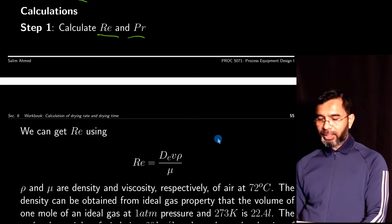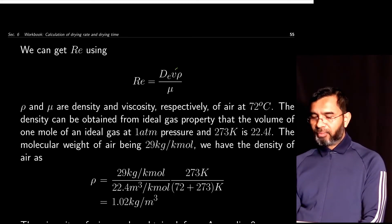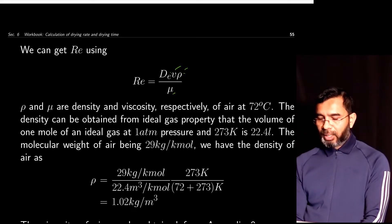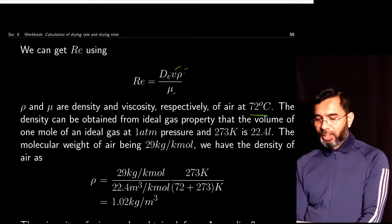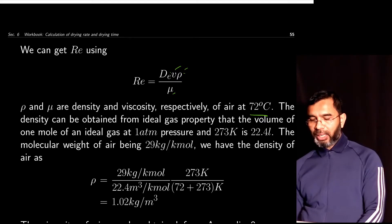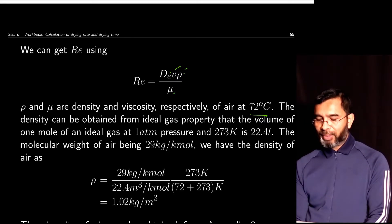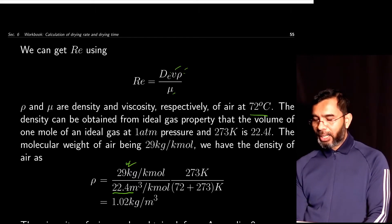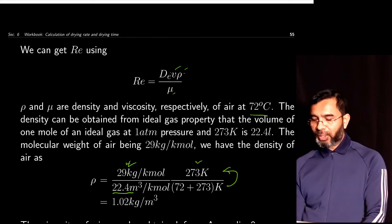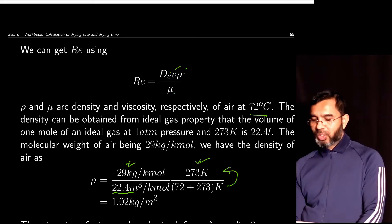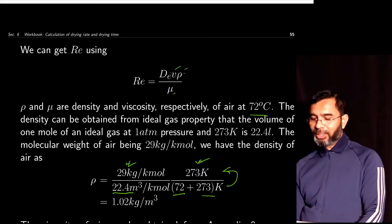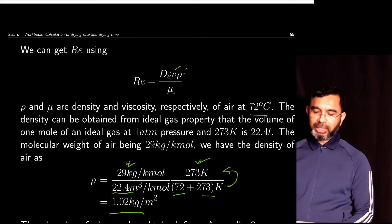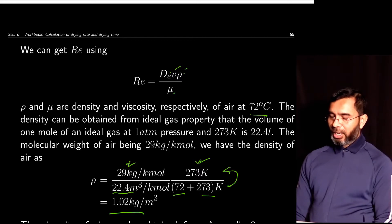For air at 72°C, the density can be obtained using ideal gas properties: one mole of ideal gas occupies 22.4 liters, and air has a molecular weight of 29 kg/kmol. A temperature correction is needed since 22.4 L/mol is at 273 K (0°C); the current temperature is 72°C = 345 K. Applying the correction factor gives a density of 1.02 kg/m³. The viscosity of air can be obtained from a viscosity table: 0.0204 centipoise = 0.0204 × 10⁻³ kg/(m·s).